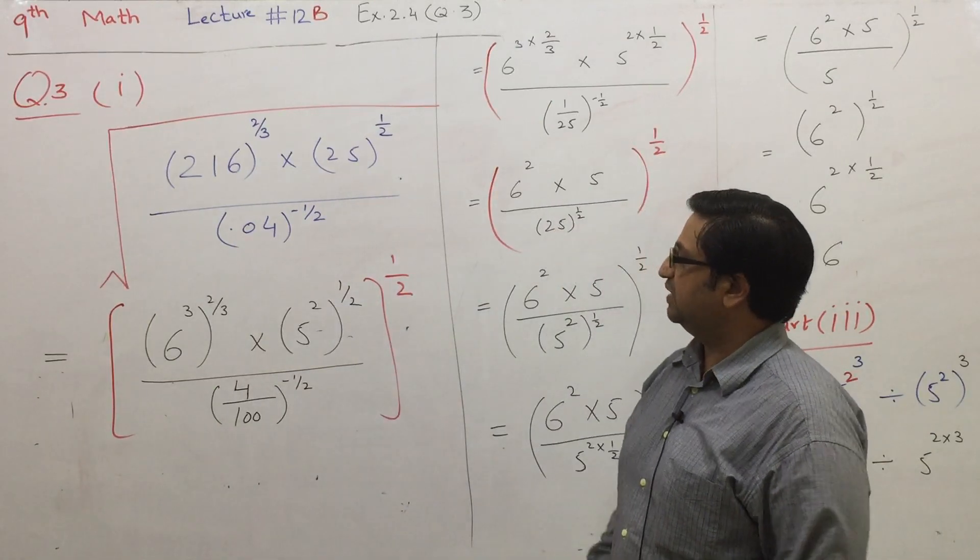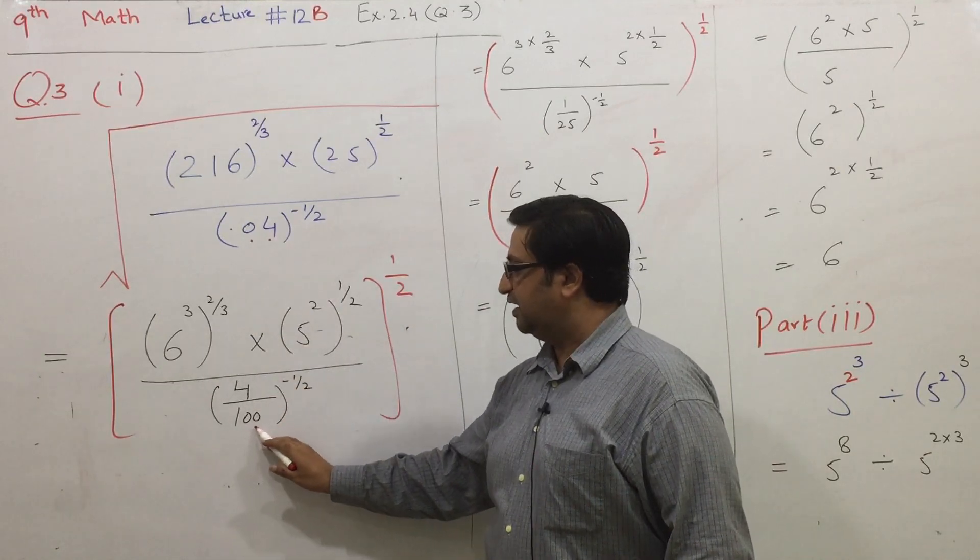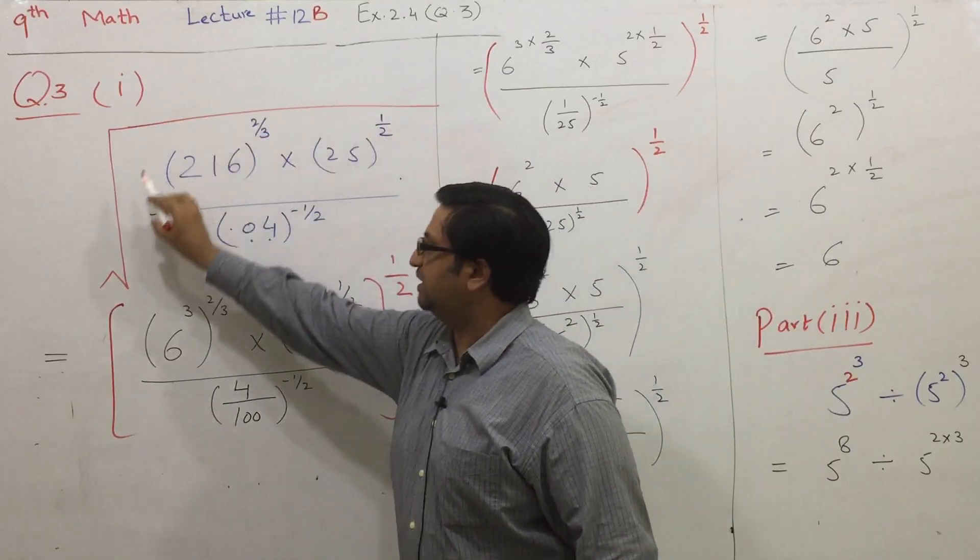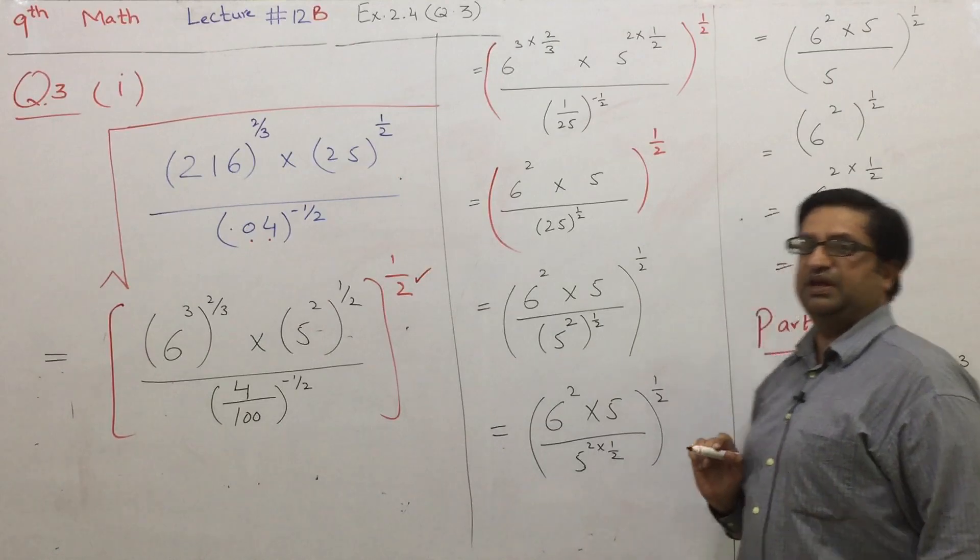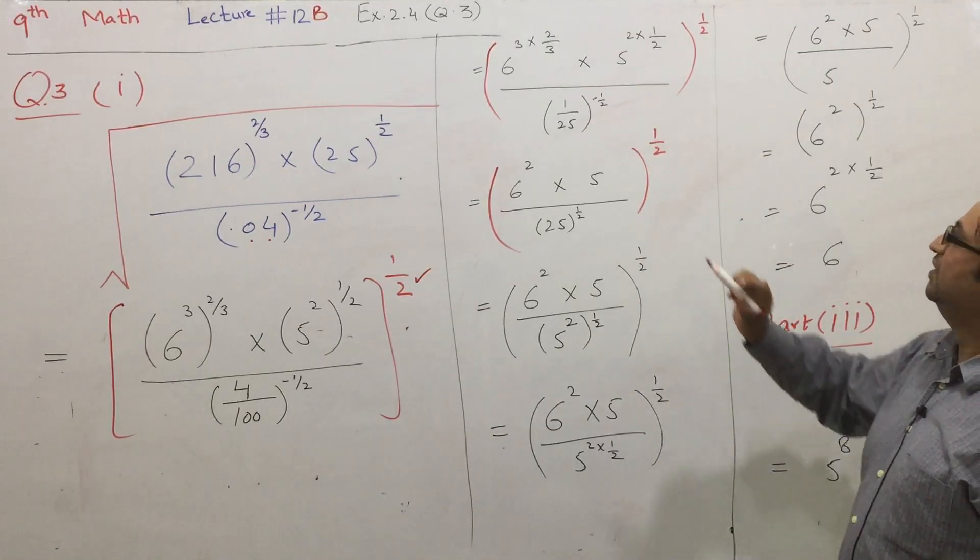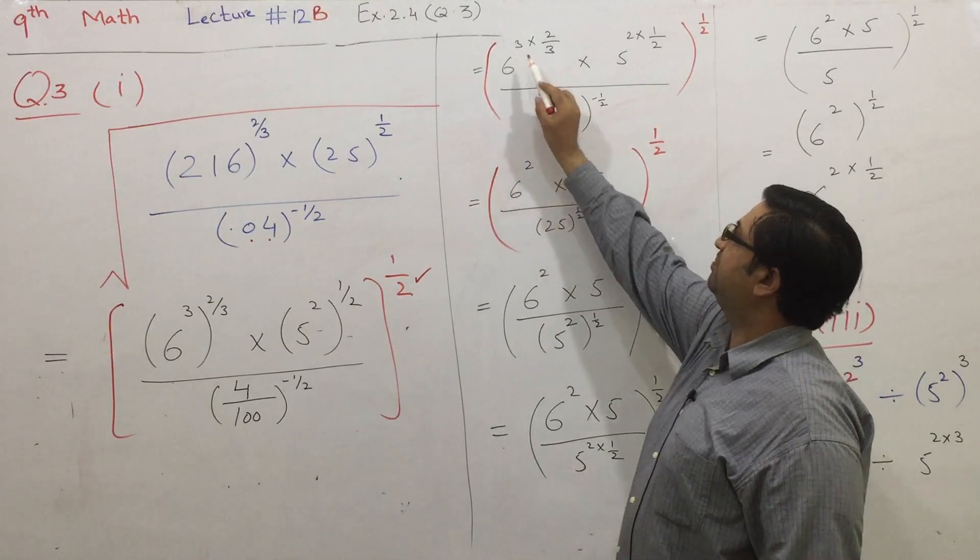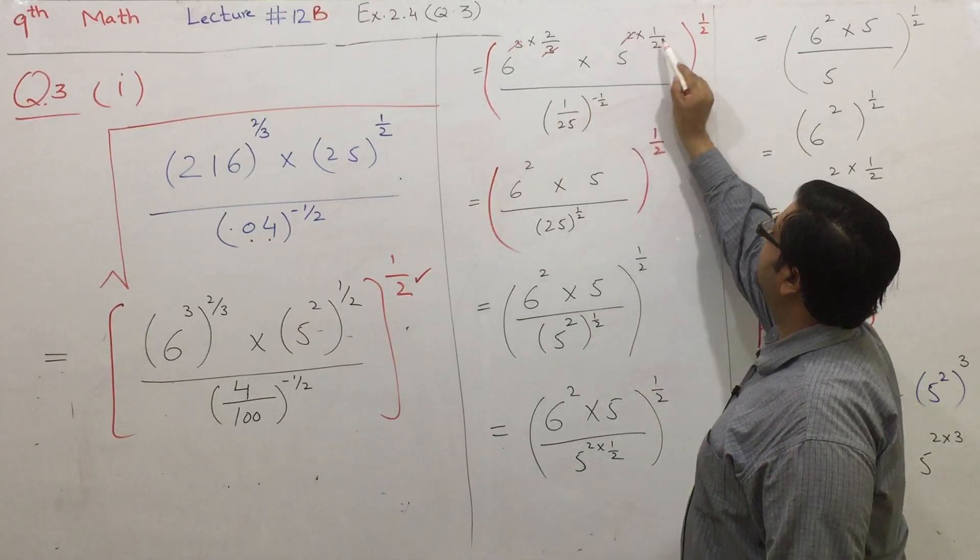When we have a power raised to a power, we multiply. This is 6 to the power 3, times 2 over 3 is 100. Now we will solve 1 by 2, 5 squared times 1 by 2. 5 squared raised to the power 1 by 2. We multiply, so we get 5 to the power 1.